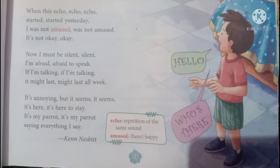'When this echo, echo started yesterday, I was not amused, was not amused, it's not okay.' He is saying that this echo started yesterday and he was not at all amused — not happy to hear this echo and the repetition of the same sound in his room. 'Now I must be silent, silent, I am afraid, afraid to speak. If I am talking, if I am talking, it might last, might last all week.' He is saying he must be silent or he is afraid to speak, because whatever he says the echo repeats it, and if he talks, that sound will last all week.